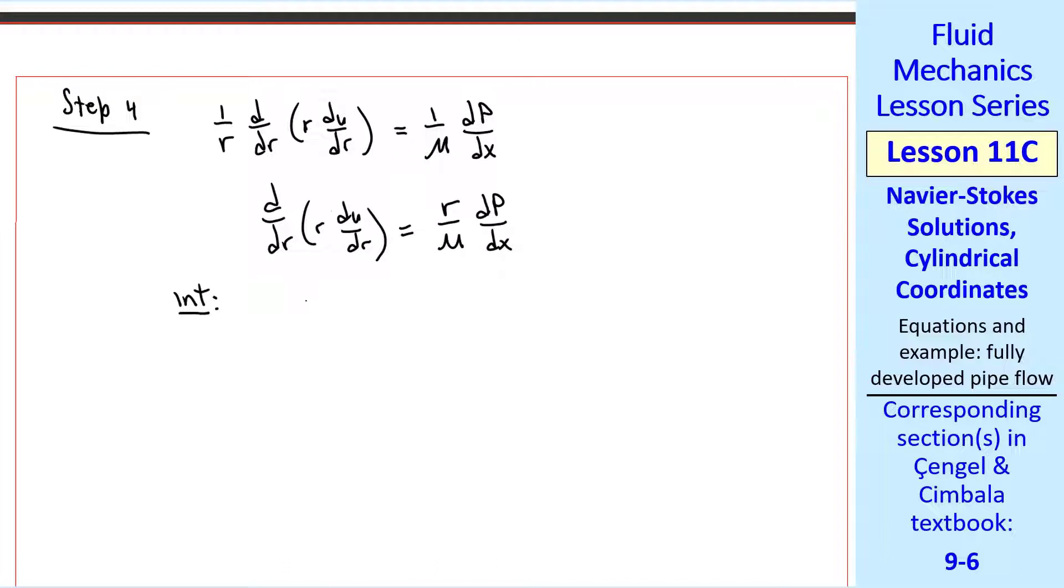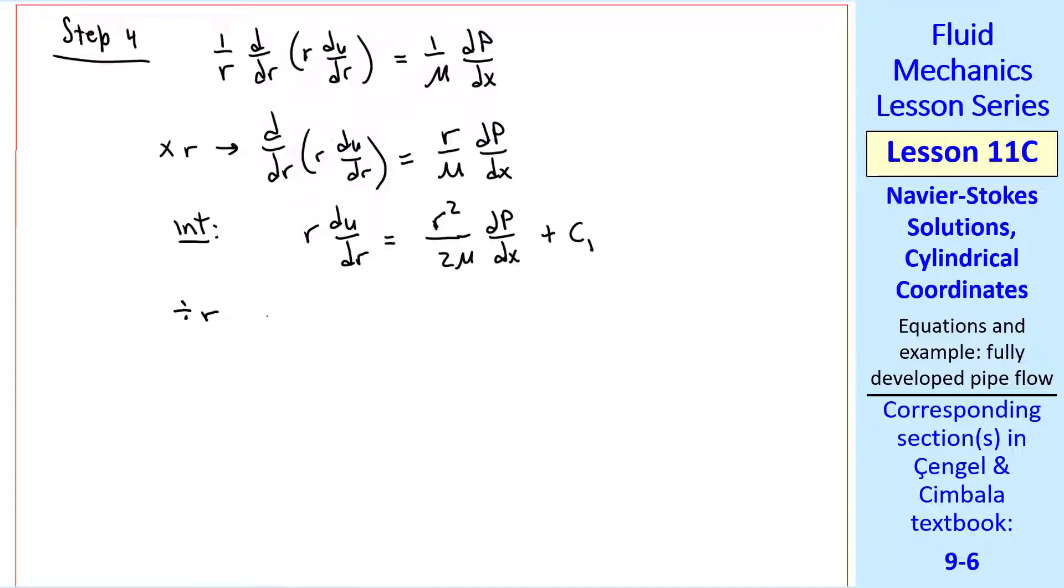Now we can integrate. We get r du/dr. And since dp/dx and μ are constants, integration gives us r² over 2 times the constants. And we add some arbitrary constant, c1, as a constant of integration. In this step, we multiplied by r. Since we had an r in the denominator, now we have an r in the numerator. So we divide both sides by r.